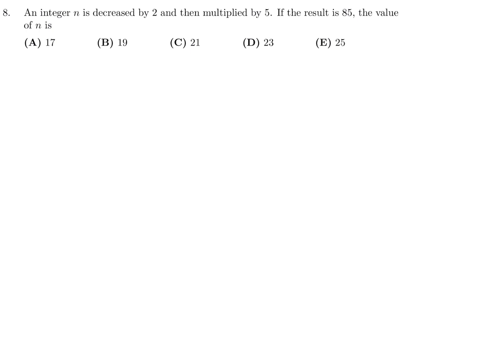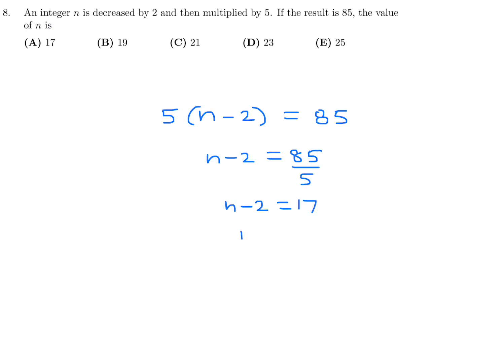An integer n is decreased by 2 and then multiplied by 5. If the result is 85, what is n? Working backwards: n minus 2 equals 85 divided by 5, which is 17. Therefore n equals 17 plus 2, which is 19. Number 8, the answer is B.